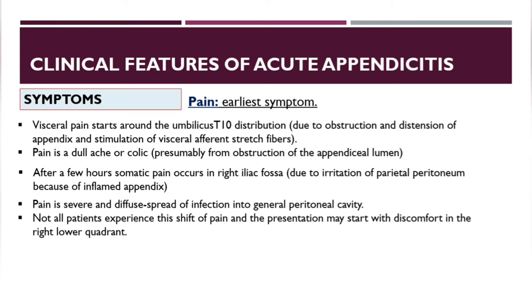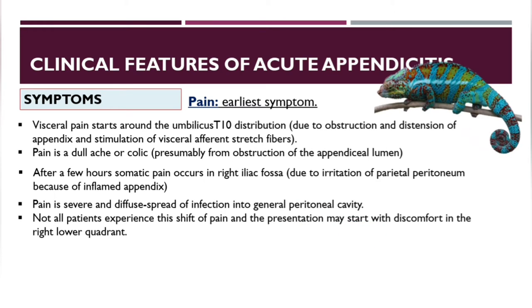If infection spreads into the general peritoneal cavity, the pain changes character. Not all patients experience this shift of pain; presentation may start with discomfort in the right lower quadrant. Acute appendicitis is sometimes called the 'chameleon of the abdomen' because of this variation in pain location.